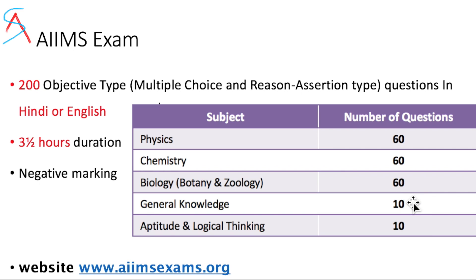In the AIIMS exam there are 10 questions related to general knowledge and 10 questions related to aptitude and logical thinking, and 60 questions each for physics, chemistry, and biology.